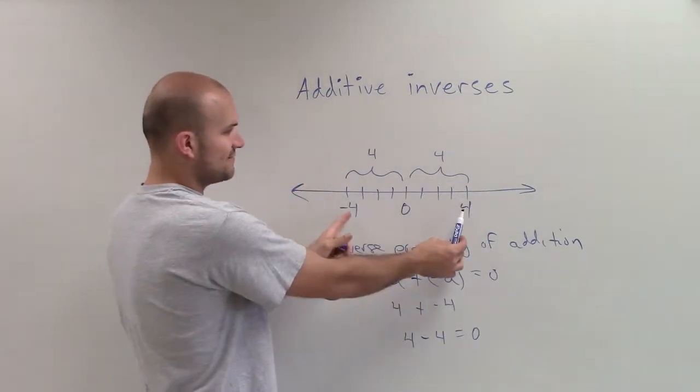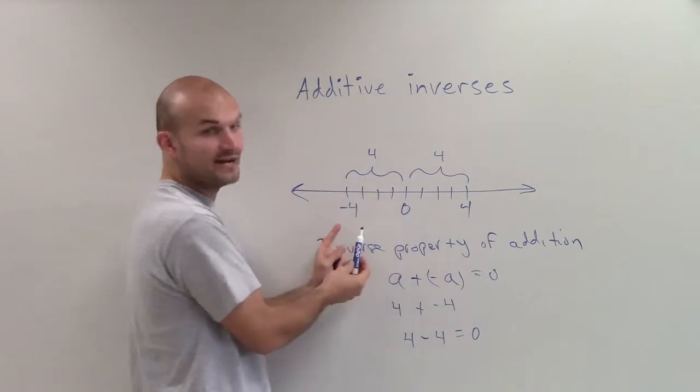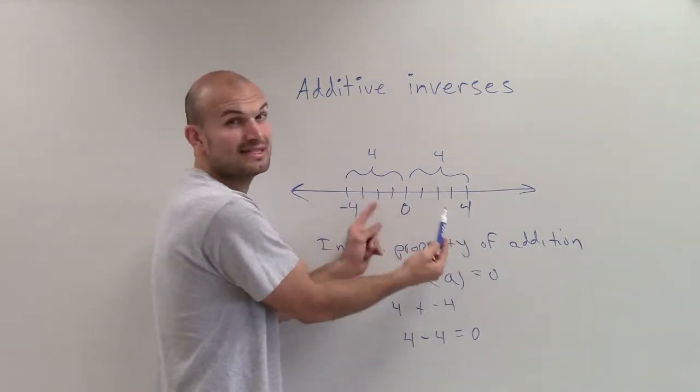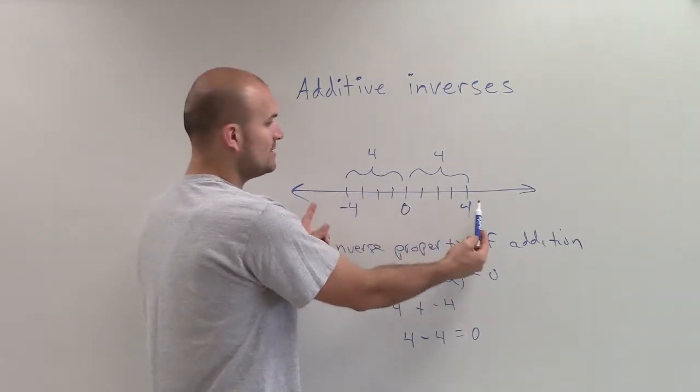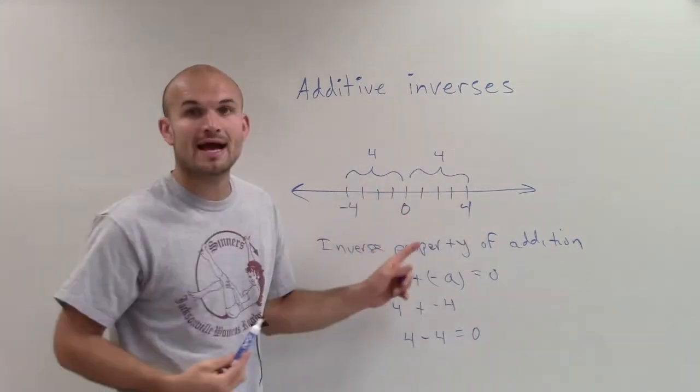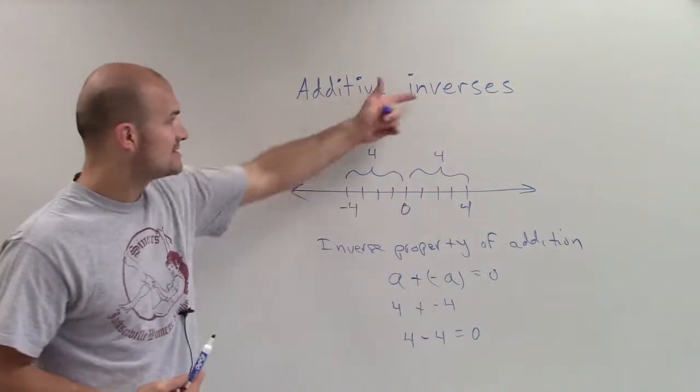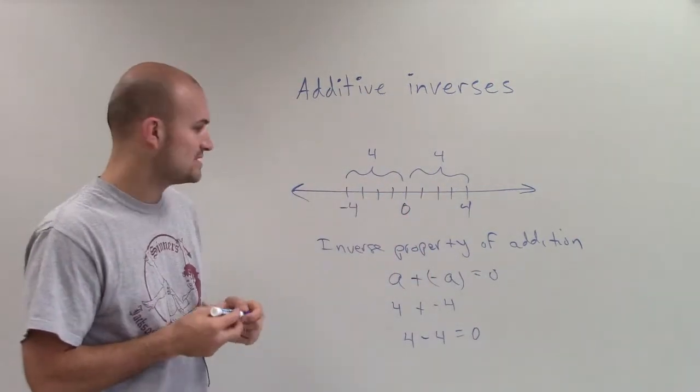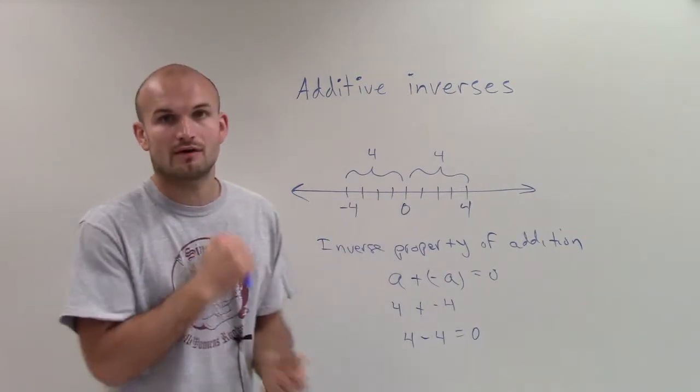Well, what we notice is since 4 and its additive inverse negative 4 are equal distance from 0, when you add them together, you actually get 0. So that is going to be how we find additive inverses by using the inverse property of addition.